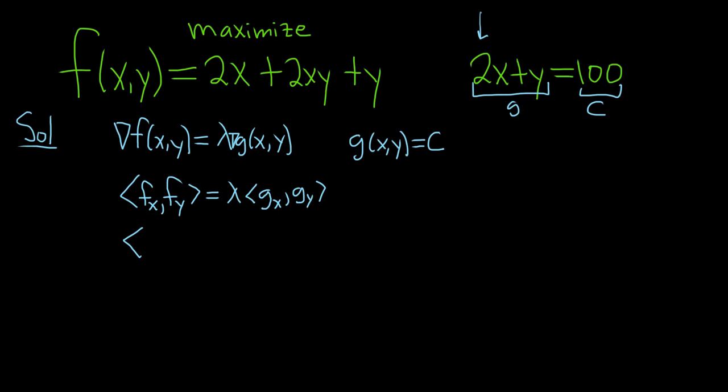So when we're taking the partial with respect to x, all of the y's are constants. So the derivative of 2x is 2. The derivative of 2xy, well, the derivative of x is 1, so we're just left with 2y. And the derivative of y is 0, so I won't bother to write it. Now we have to compute the partial derivative of f with respect to y. Well the derivative of 2x is 0. The derivative of 2xy, the derivative of y is 1, so we're just left with 2x. And the derivative of y is 1, so plus 1.